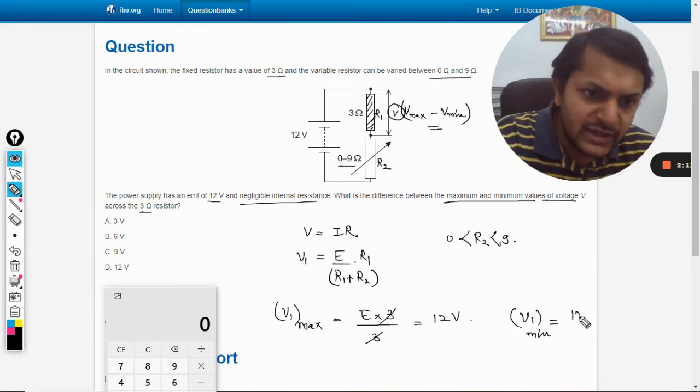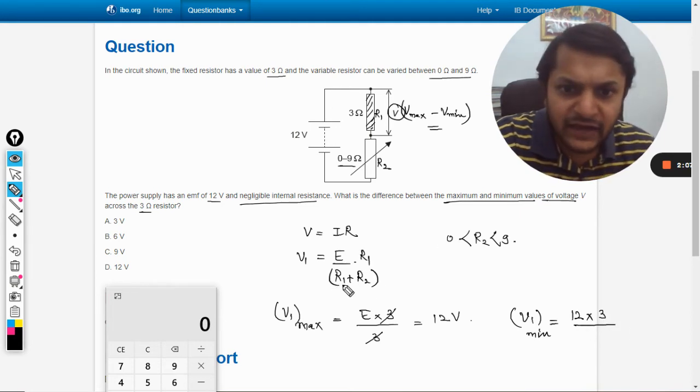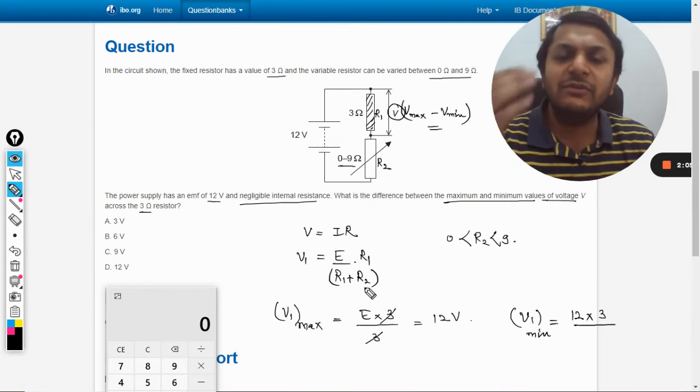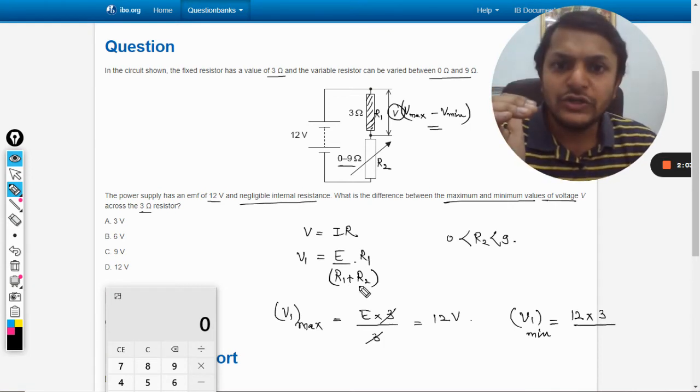So if I want this to be minimum, V1_min will be E into R1 divided by R1 plus R2, and I need to have the maximum value of R2 now. So it will be 3 plus 9.